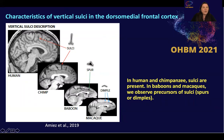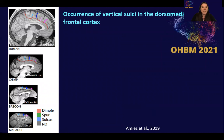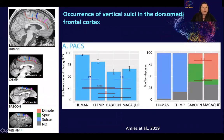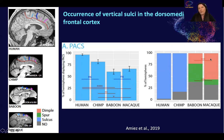Looking at the vertical sulci present in this region, they appear as full sulci in both humans and chimpanzees. In baboon and macaque, we observe precursors of sulci that we call spurs or dimples depending on their shape. The paracentral sulcus, the most posterior one, is almost equally present in humans and chimps, and equally present in baboons and macaques, but with lower frequency in old world monkeys than in hominids. In terms of morphology, in humans and chimps they are all sulci; in baboons they are most often spurs and dimples; and in macaques more often dimples than spurs.